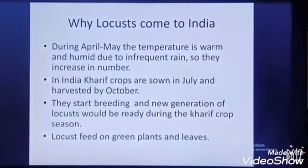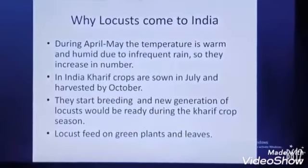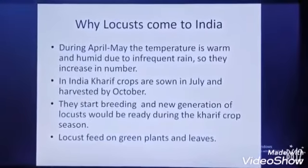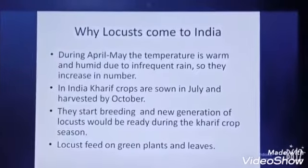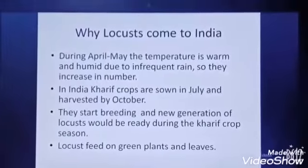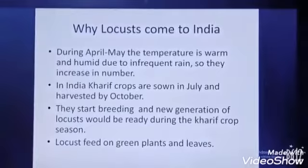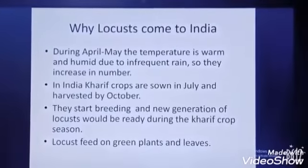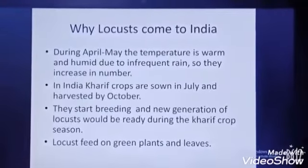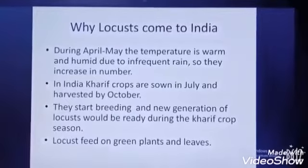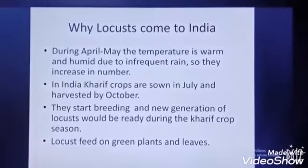Why do they come to India during the months of April and May? The temperature here is warm and humid, so they increase in number. The Kharif crop season is in July and crops are harvested in October. So if they are not controlled now, the new generation of locusts would be ready to pound on the Kharif crop during its harvest season.